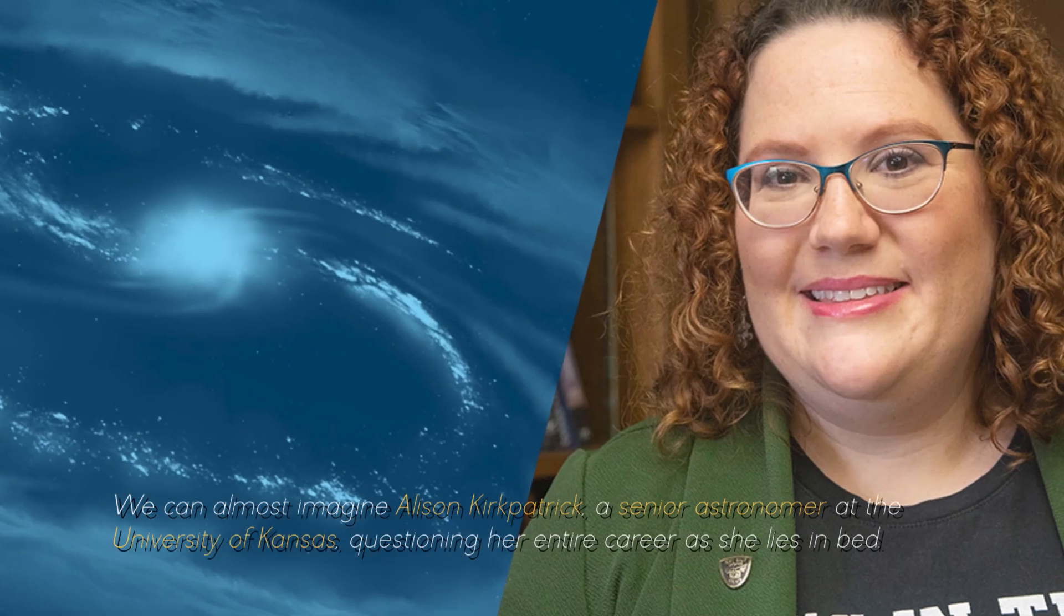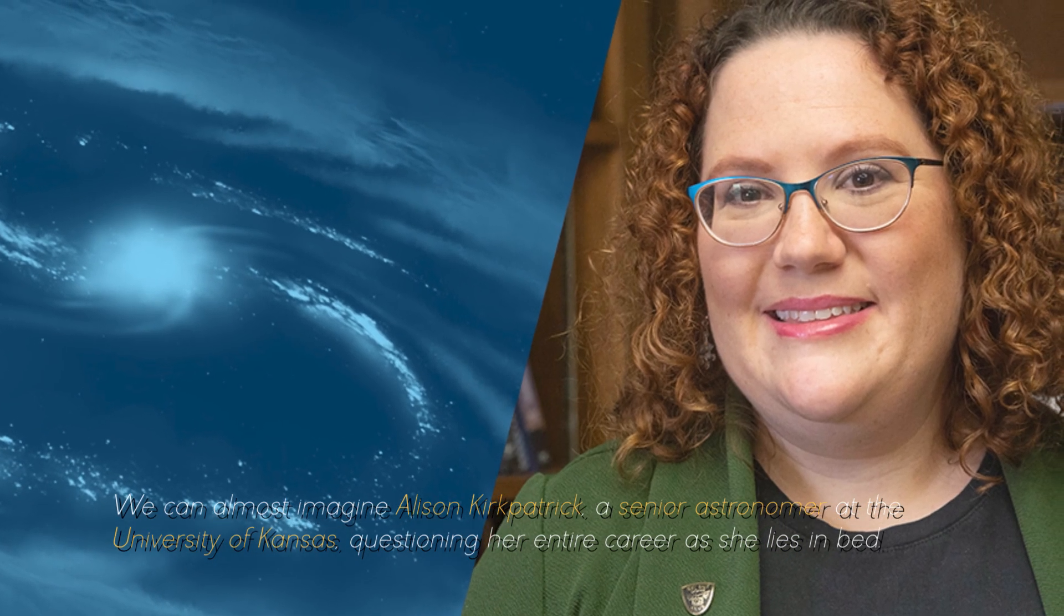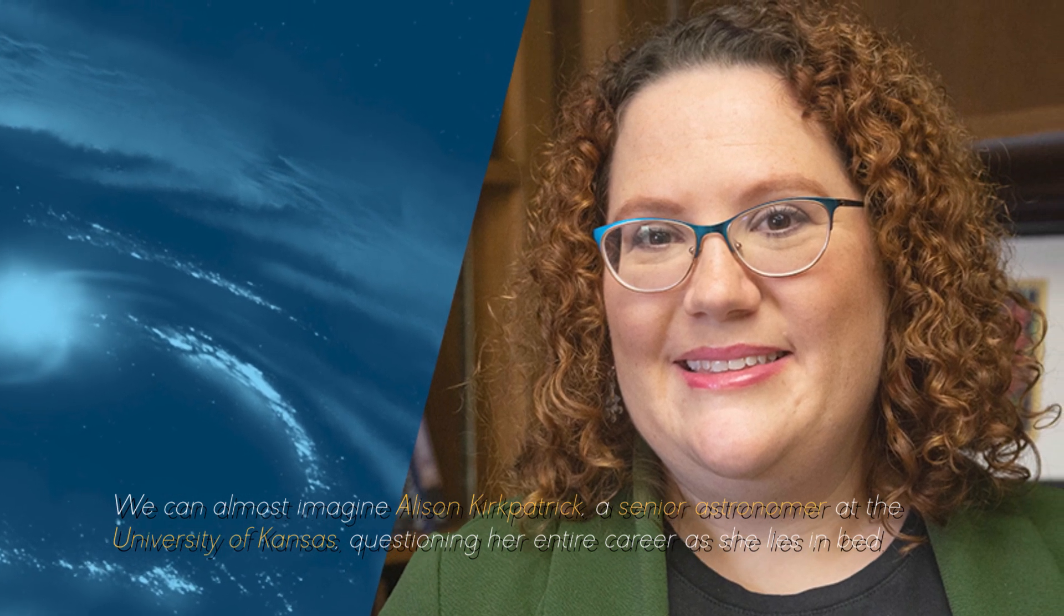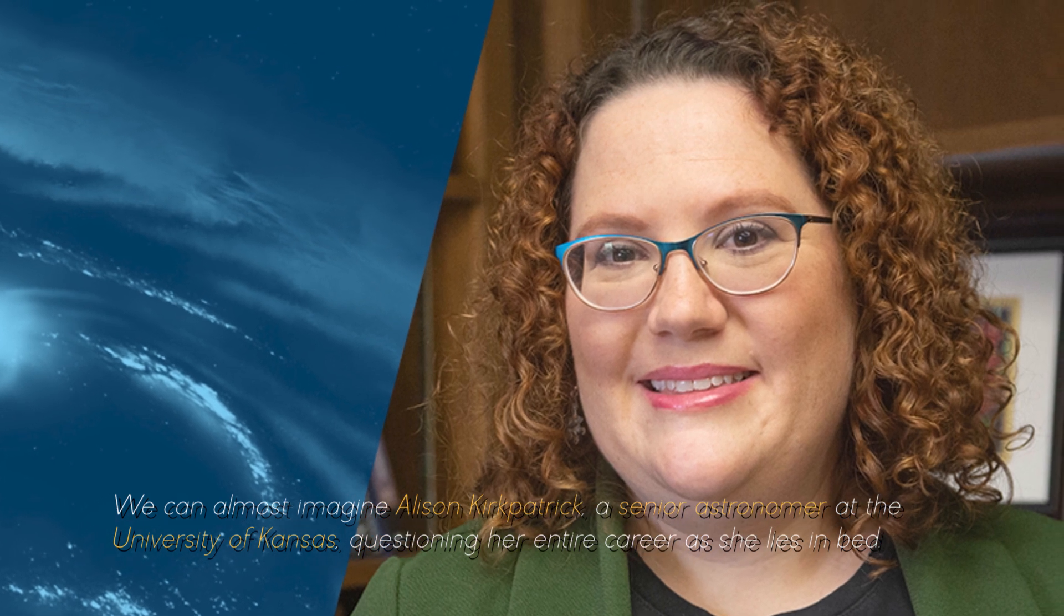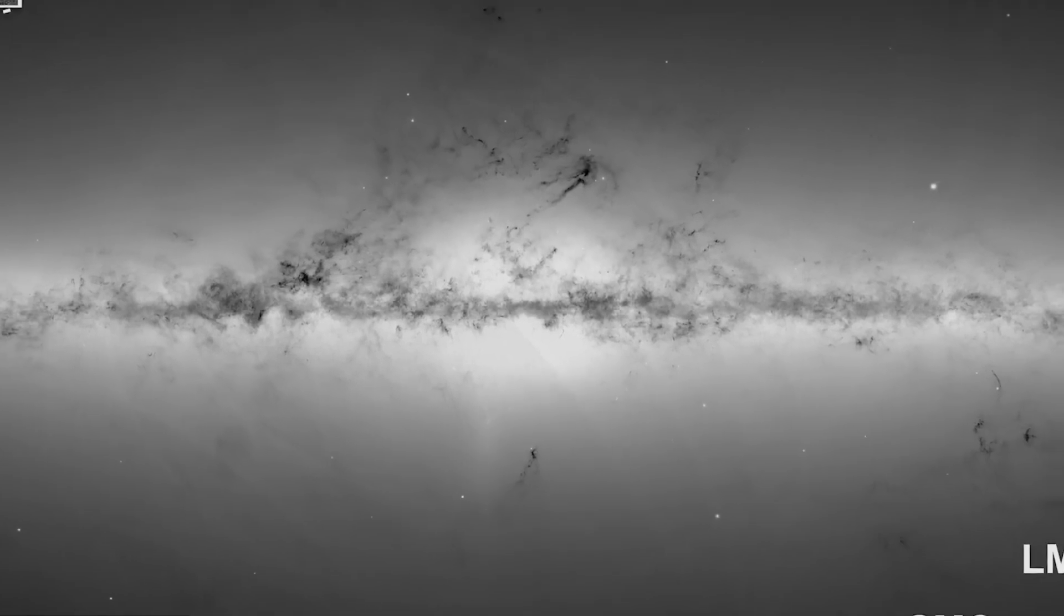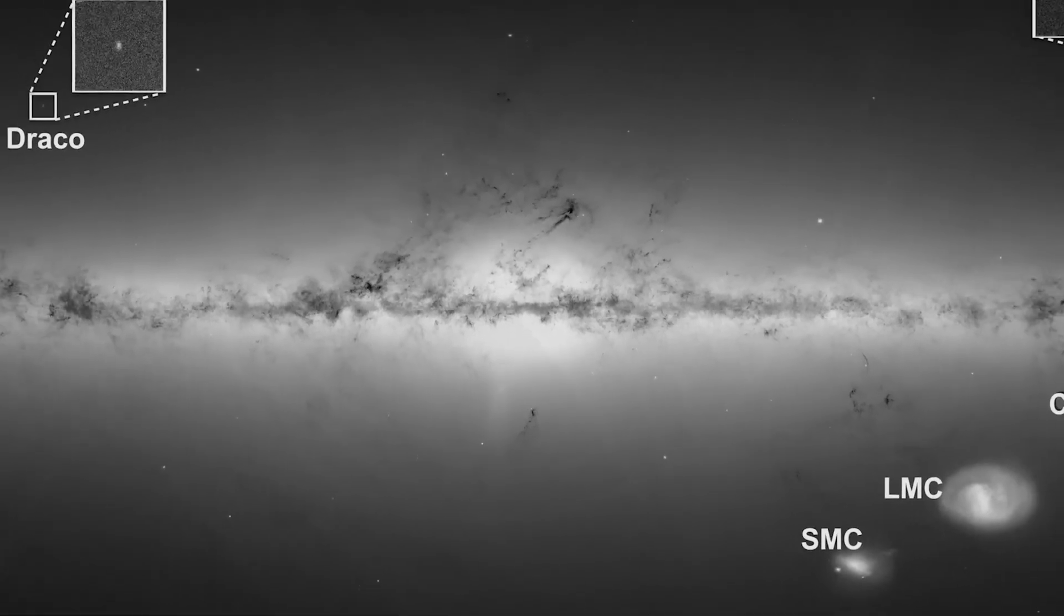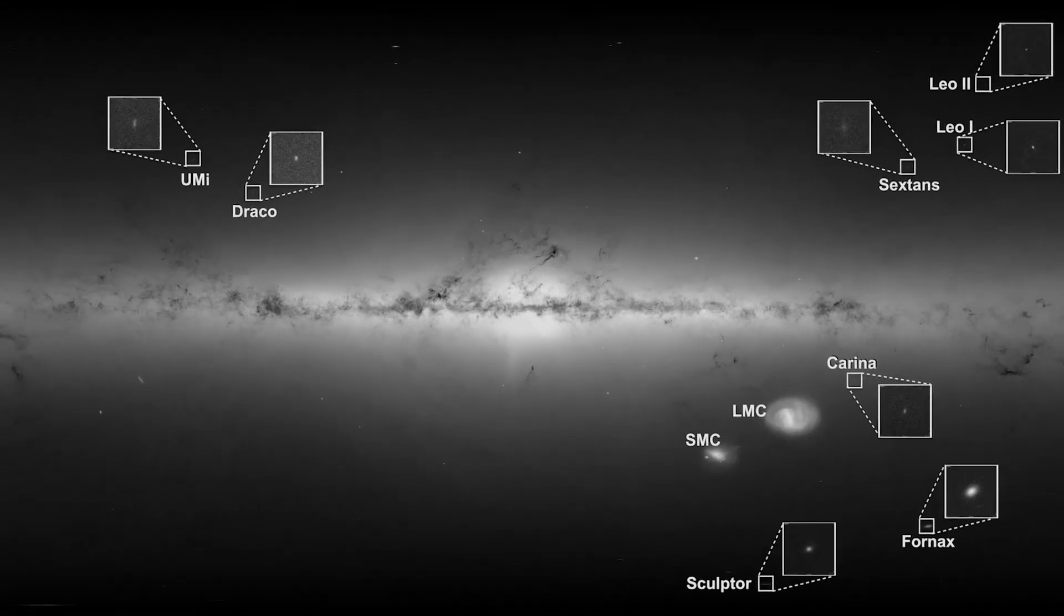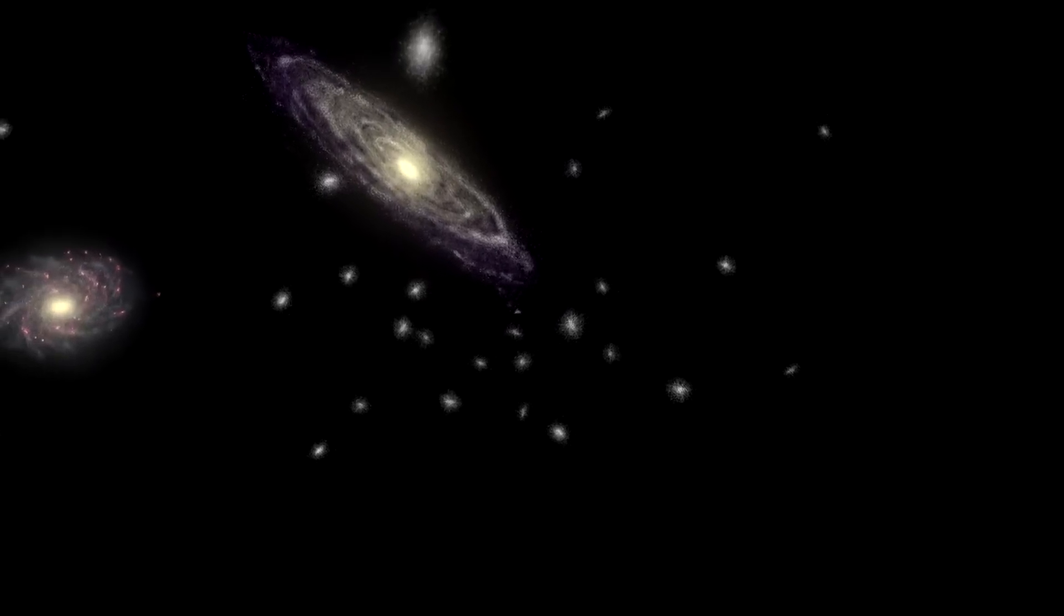We can almost imagine Alison Kirkpatrick, a senior astronomer at the University of Kansas, questioning her entire career. Why so much surprise? The reason for this bewilderment lies in the fact that galaxies captured by the James Webb do not behave according to what the Big Bang hypothesis would predict. They are too small, excessively uniform, and appear to be in a state incompatible with this theory.